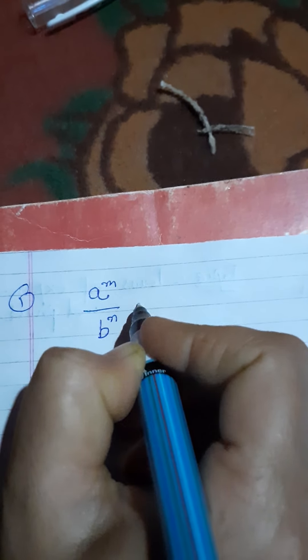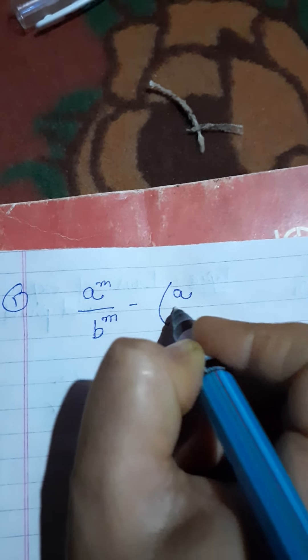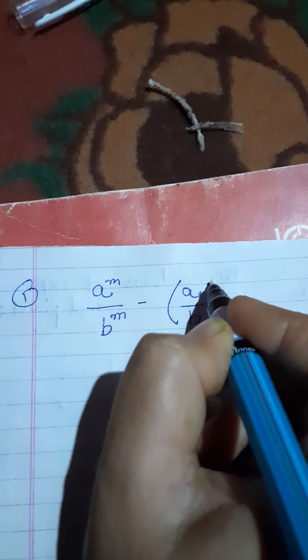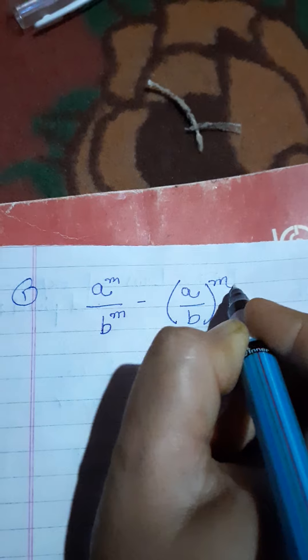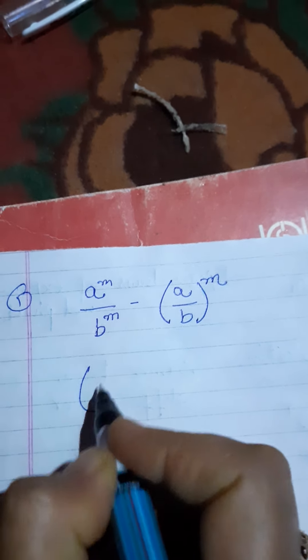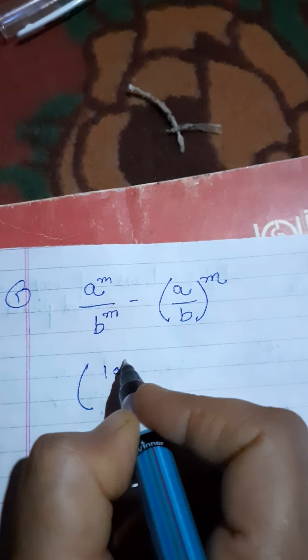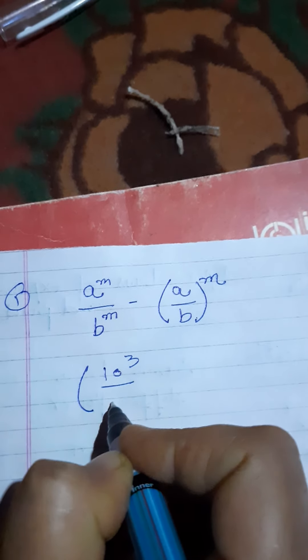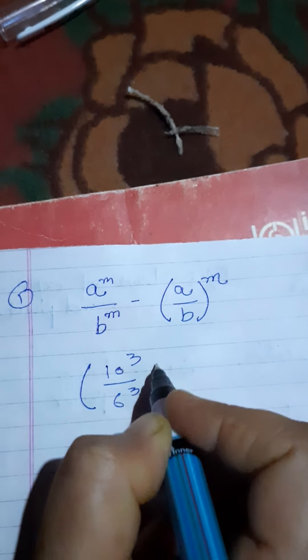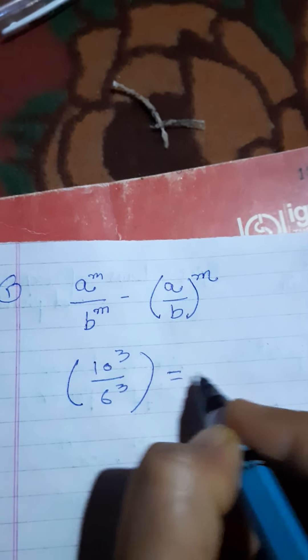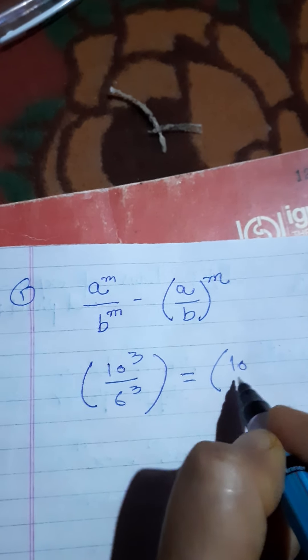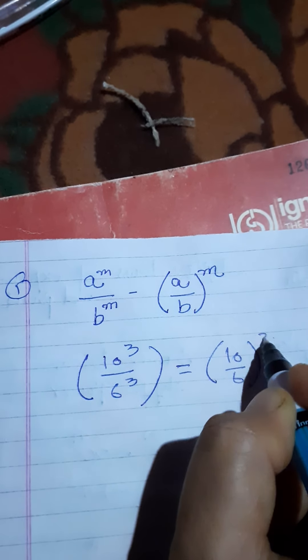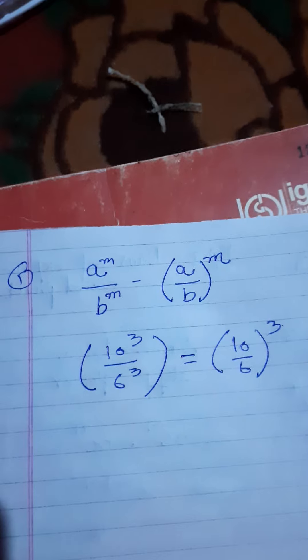Now when the power is the same but the base is different, for example, 10 raised to power 3 divided by 6 raised to power 3, we get 10 divided by 6, whole raised to power 3.